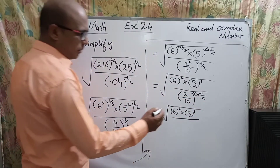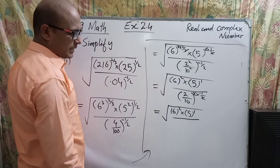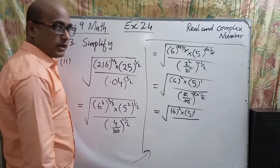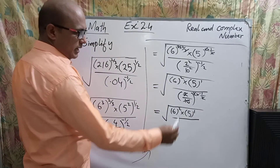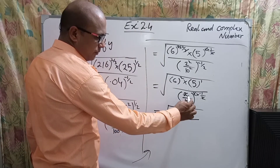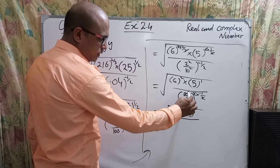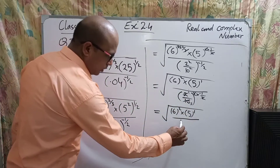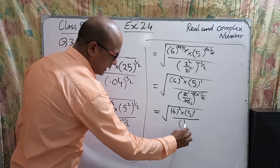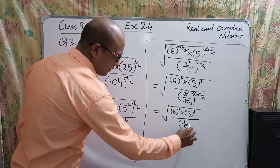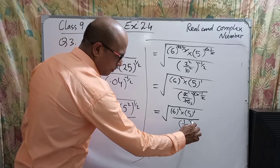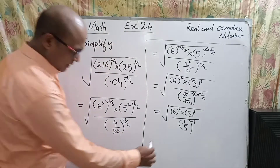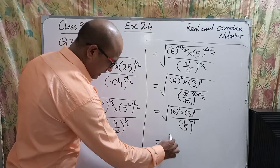The powers cancel: 2 in the numerator and 2 in the denominator are cancelled. Then 2×1 = 2 and 2×5 = 10, so we are left with 1/5 in the denominator with exponent minus 1.